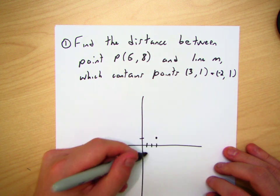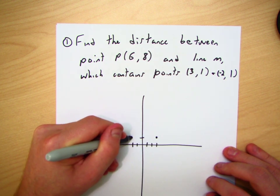(-2, 1), okay, well, I'd go -2 and up 1, so it's something around here.